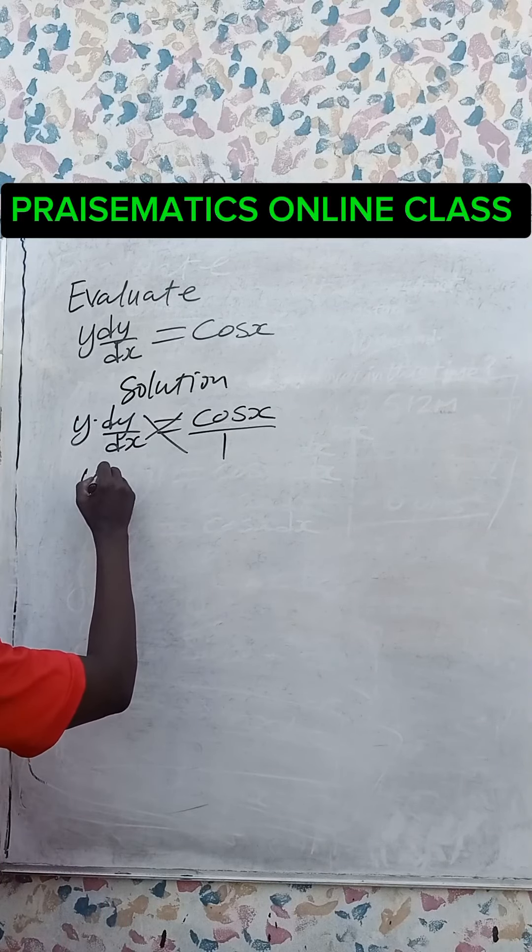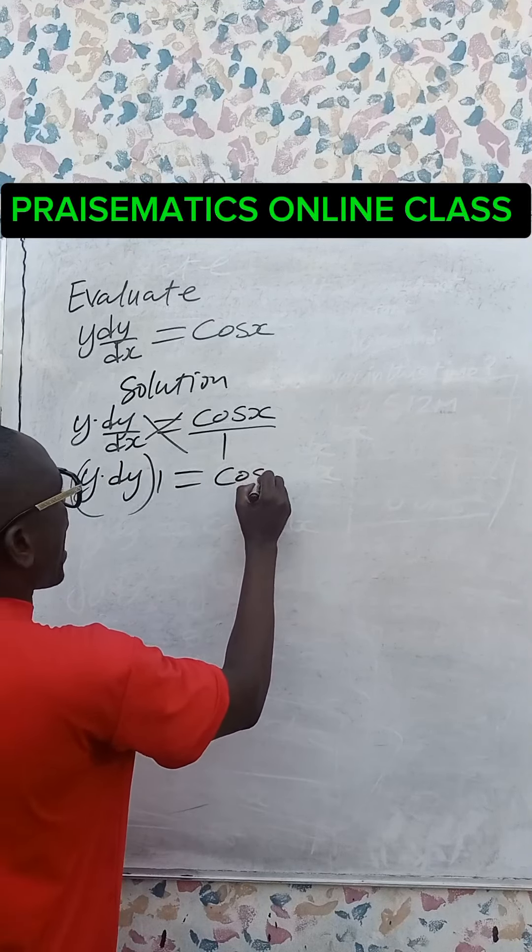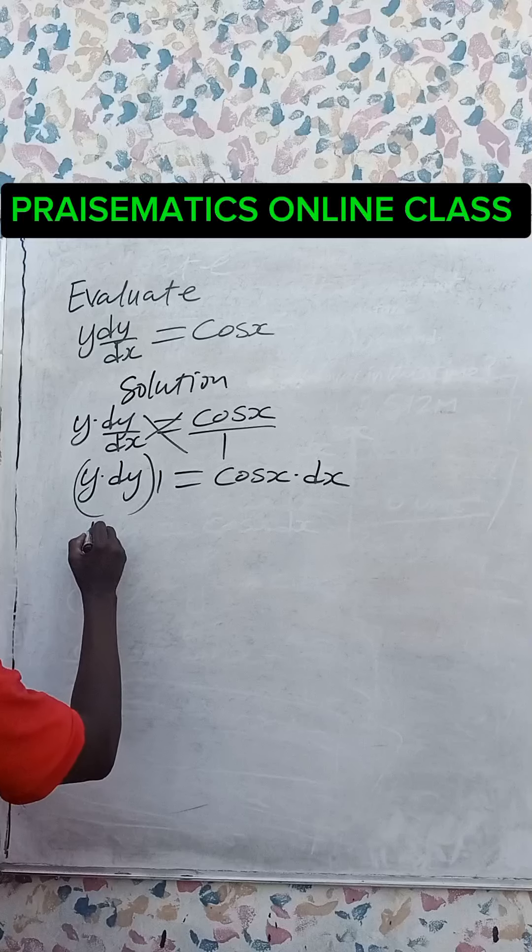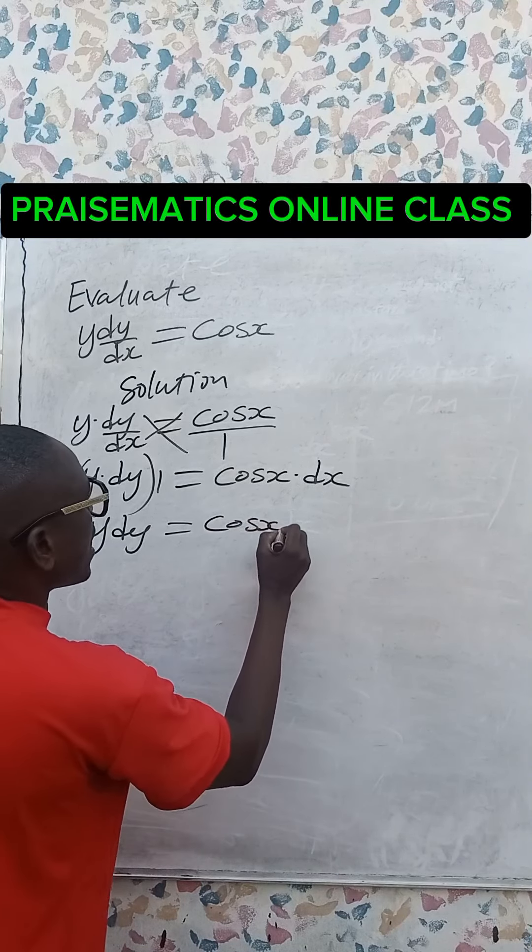We have y dot dy multiplied by 1 equals cos x dot dx. This gives us y dy equals cos x dx.